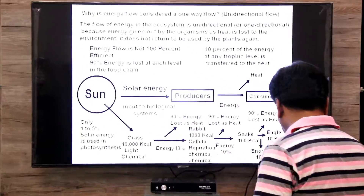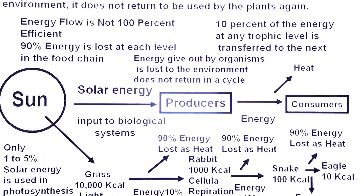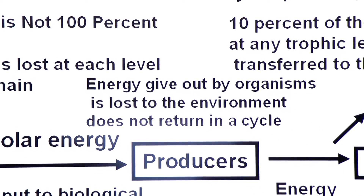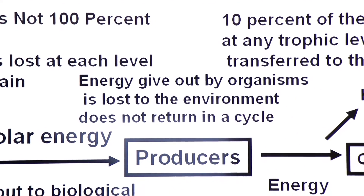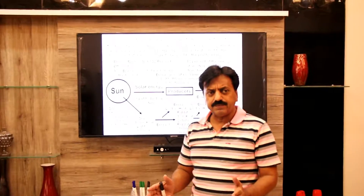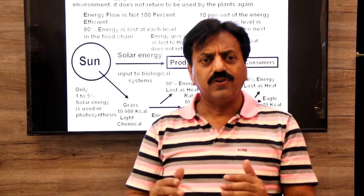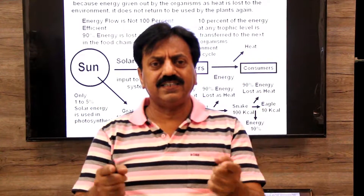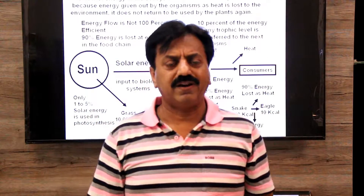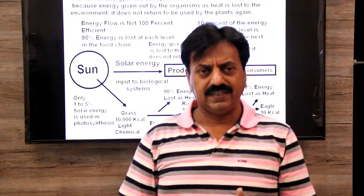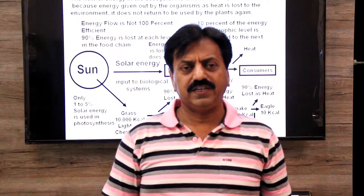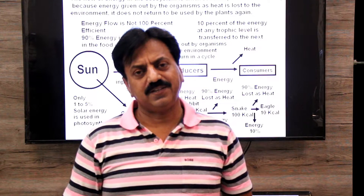The energy that is lost at each stage will not be available to the plants again for reuse — it does not return in a cycle. Energy given out by an organism is lost to the environment and does not return, which is why energy flow in a biological system is always unidirectional. Wish you all the best, thank you.